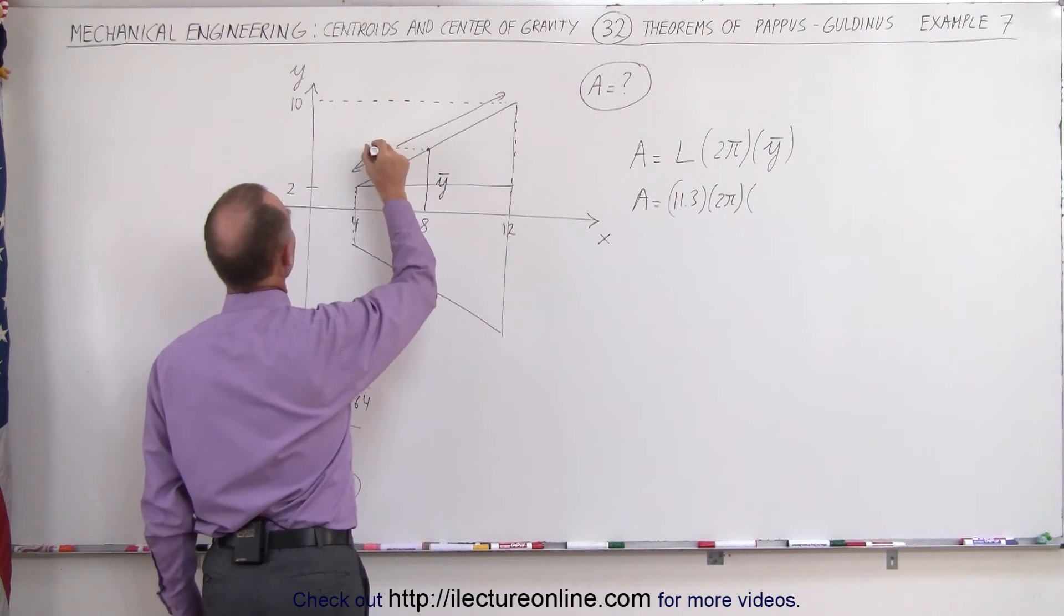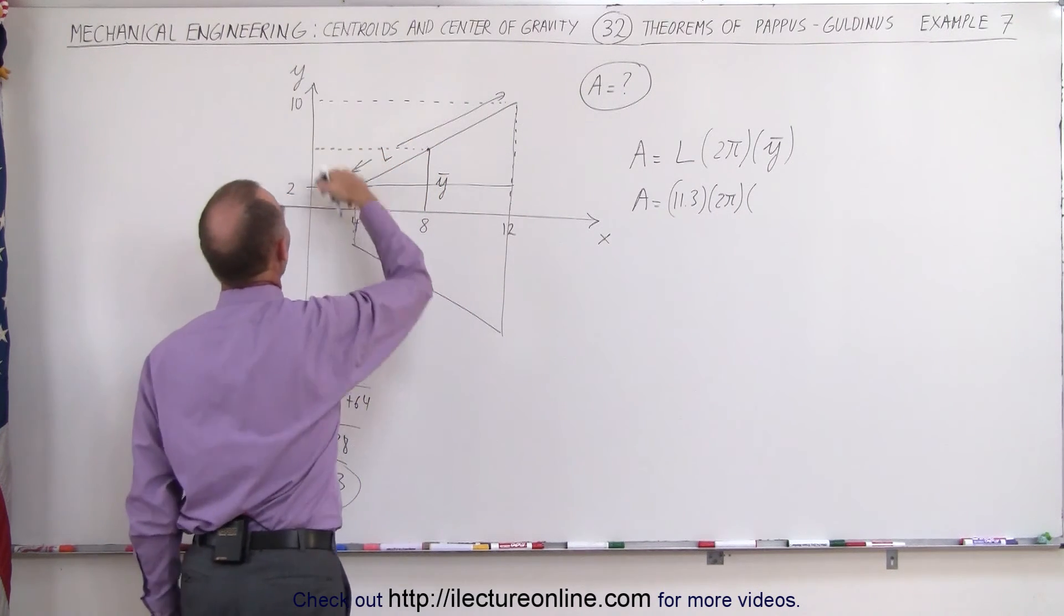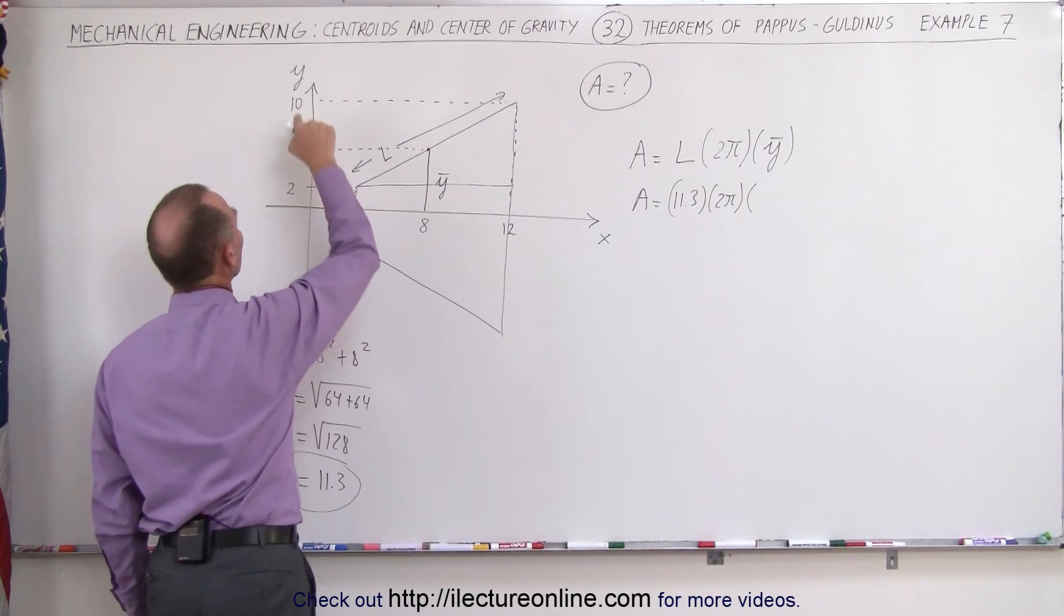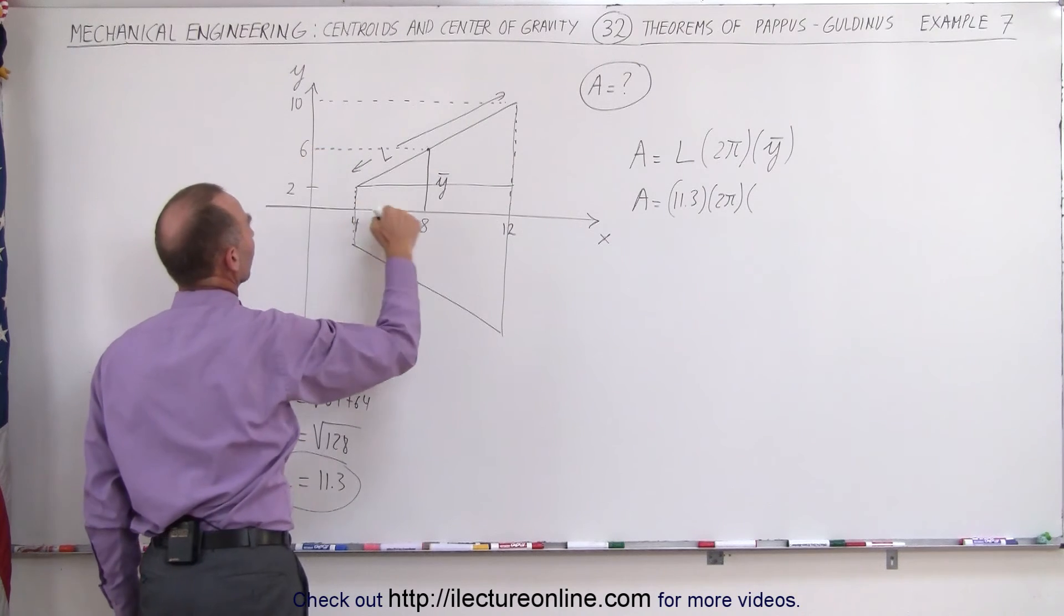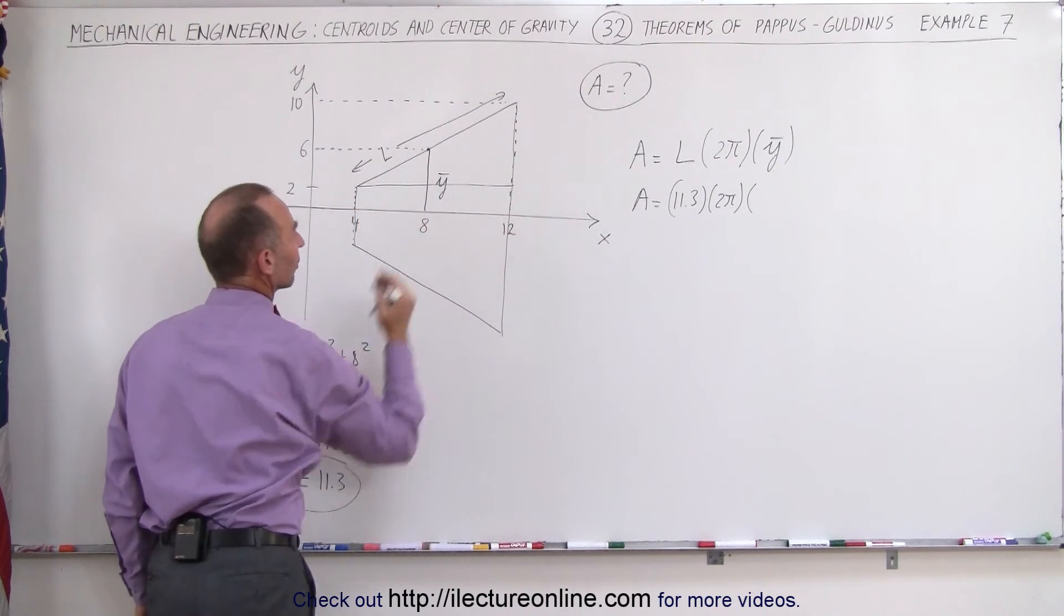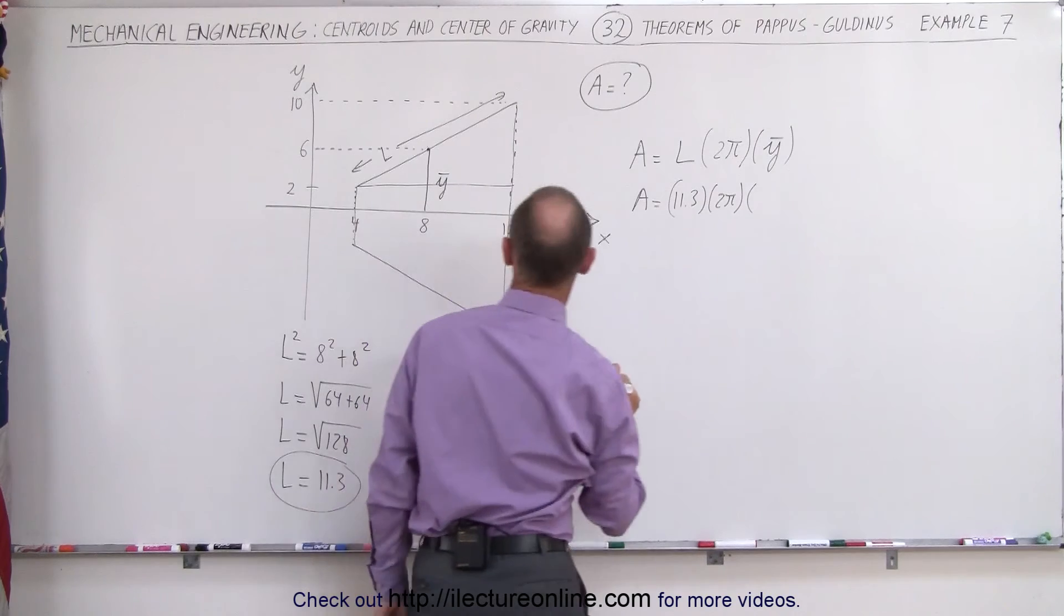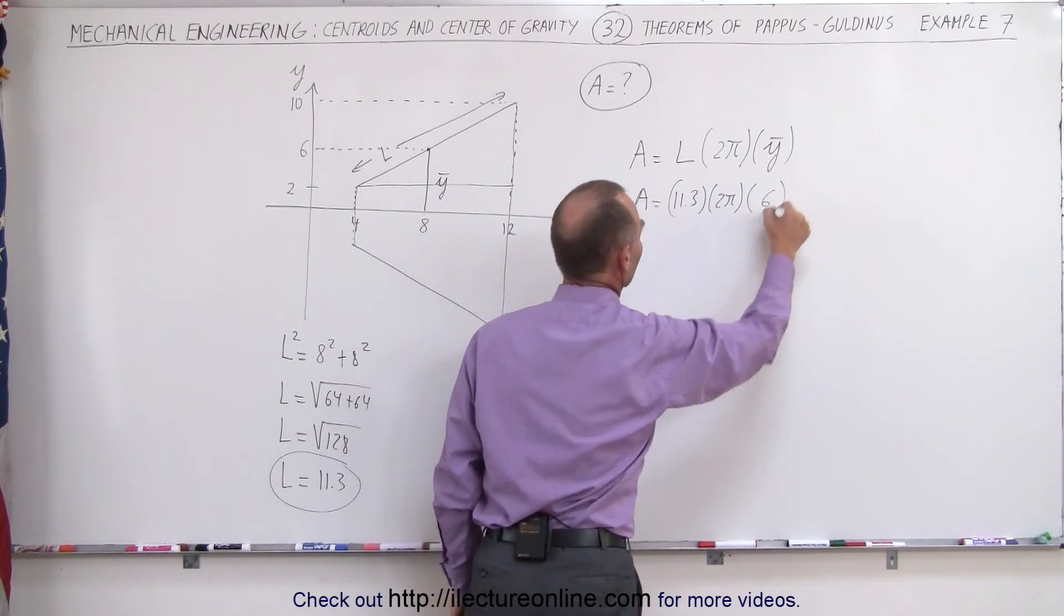And this point right here, that's what we're looking for, would also be at the halfway point, would be 2 plus 10 is 12 divided by 2, that would be 6. So the distance from there to there is 6. The distance from there to there is 8. This becomes 6.